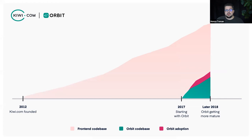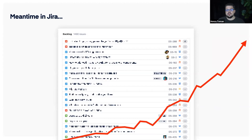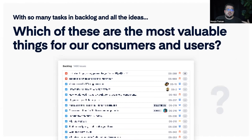Over even more time, the whole codebase grew. We were slowly refactoring older parts, adoption grew, and components and content in the design system grew as well. But what also grew was our list of tasks in Jira — we had thousands of tasks — and it became a huge flat list where it was hard to realize what were the most valuable things to focus on for our consumers and users.